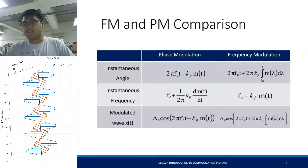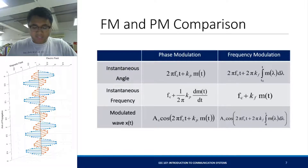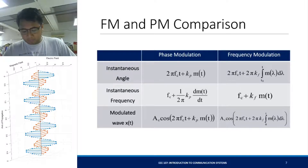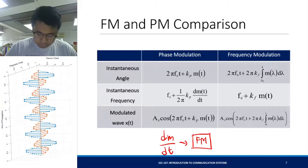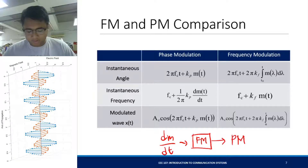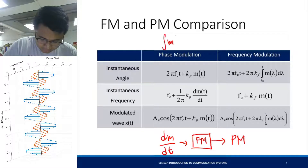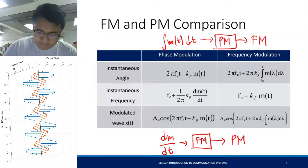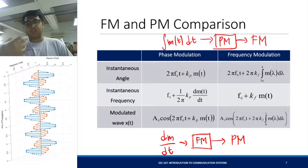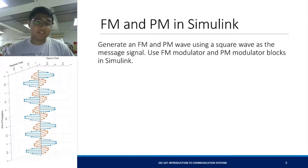The comparison between an FM and a PM signal is shown in this table. The instantaneous angle and instantaneous frequency are both compared, and you can see there is a relationship between them. If you put the derivative of the message into a frequency modulator, you get a phase modulated wave. Similarly, if you put the integral of the message into a phase modulator, the resulting signal is an FM signal. A demonstration will be given in the lecture using Simulink — something to look forward to.